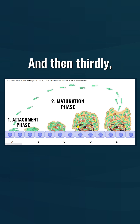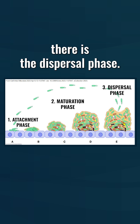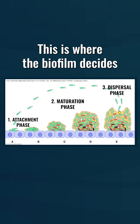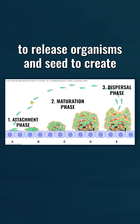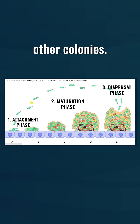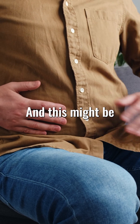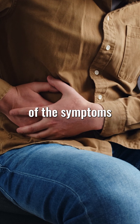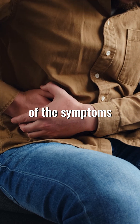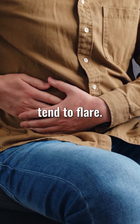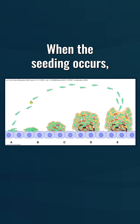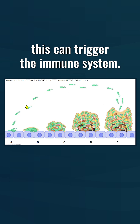And then thirdly, there is the dispersal phase. This is where the biofilm decides to release organisms and seed to create other colonies. This might be where a lot of the symptoms tend to flare. When the seeding occurs, this can trigger the immune system.